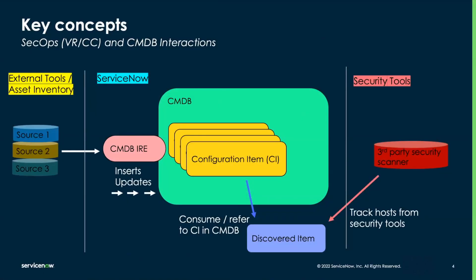Let's move into some key concepts. As you can see on the diagram, on the left we have our external tools and asset inventories. These are what feed into the ServiceNow CMDB. As this information is brought into the CMDB, the IRE acts as the interface that controls the inserts or updates — creating new CI records and updating attributes on existing CI records. On the right side, we have our security tools such as vulnerability scanners. The third-party scanner is what creates the Discovered Item, and the Discovered Item is what is used to consume data from the CMDB, stitching the two together.